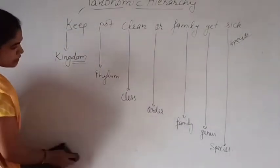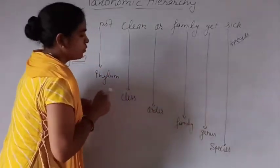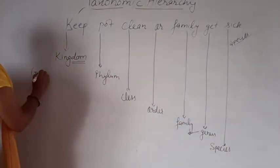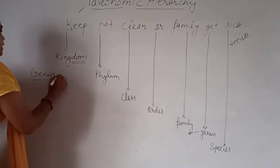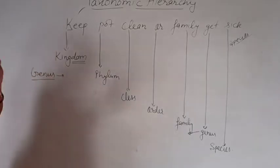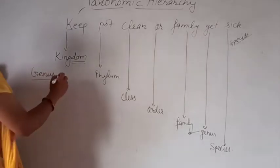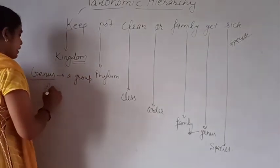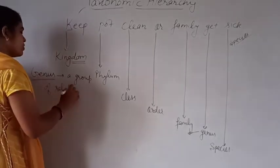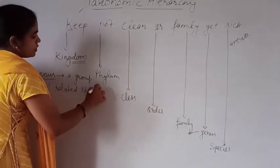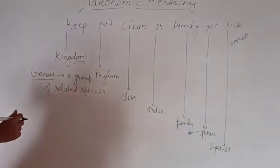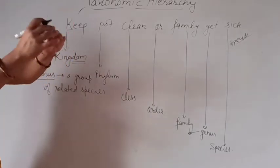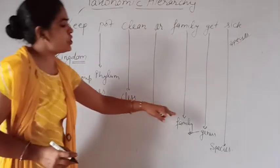Next is genus. Genus is a group of related species — species which have some common characteristics will constitute a common genus.